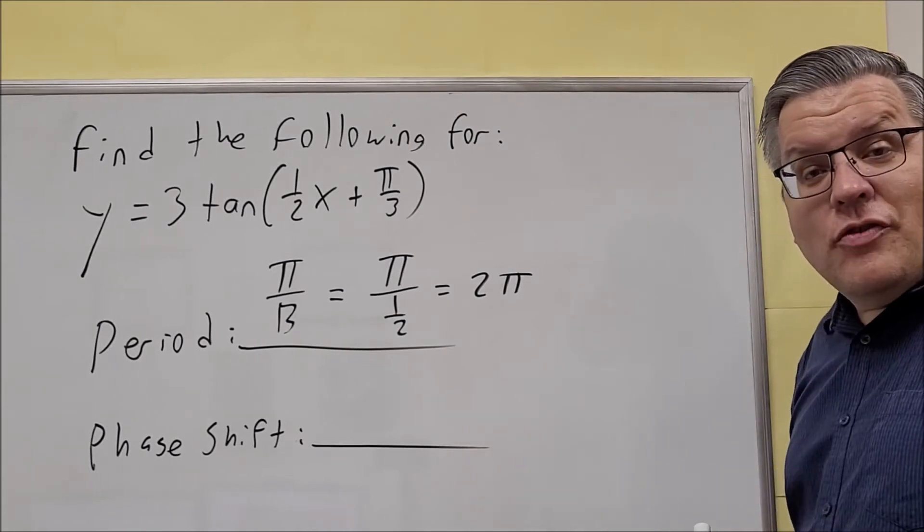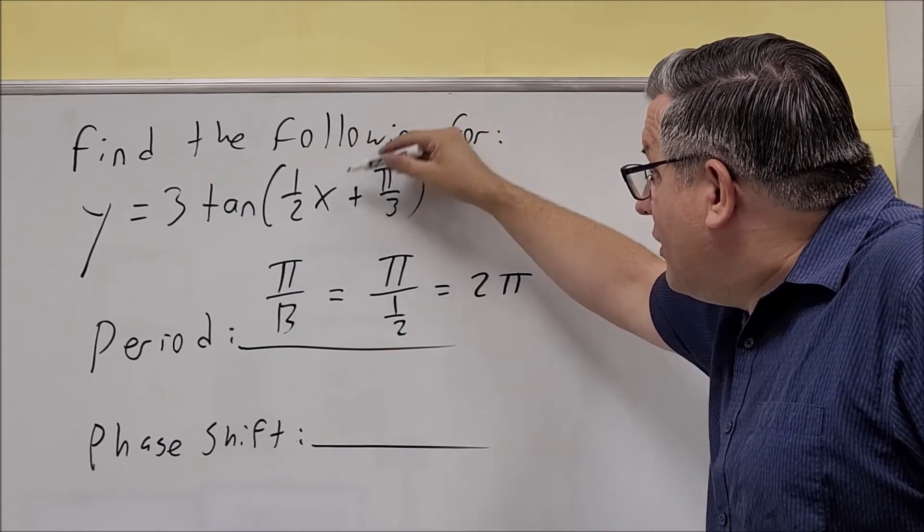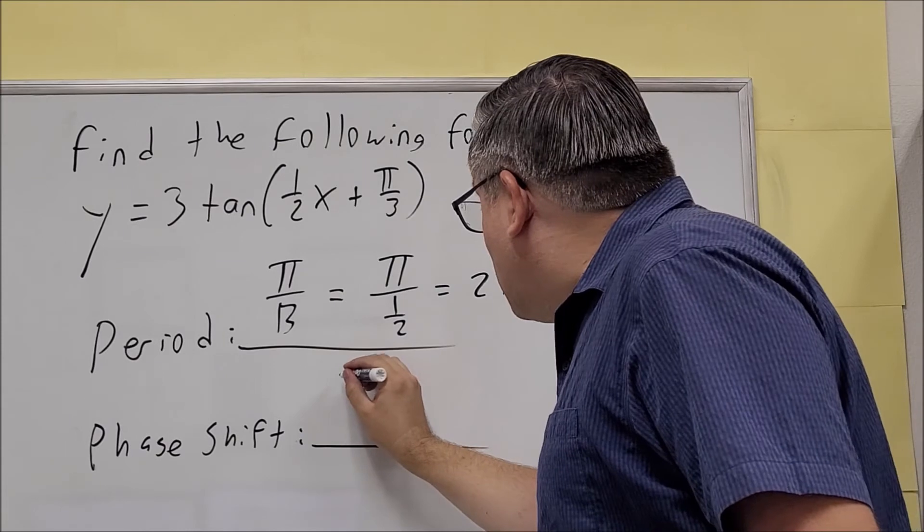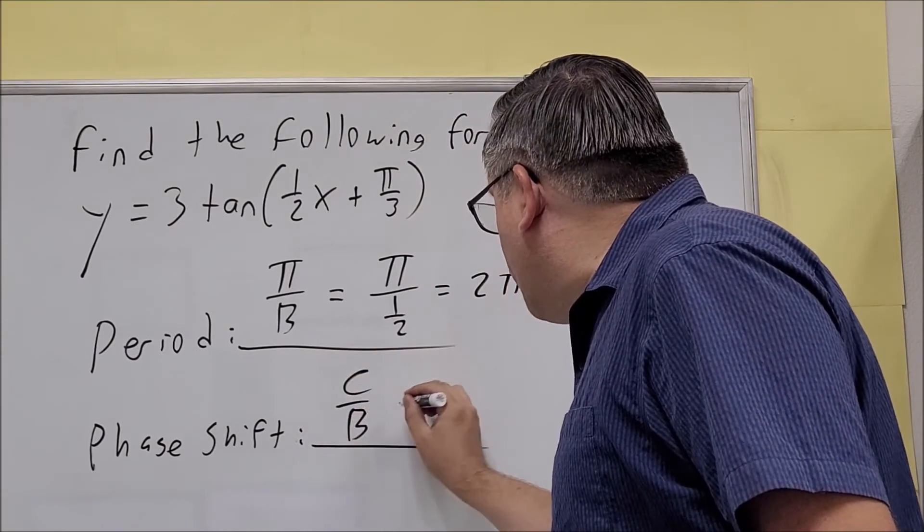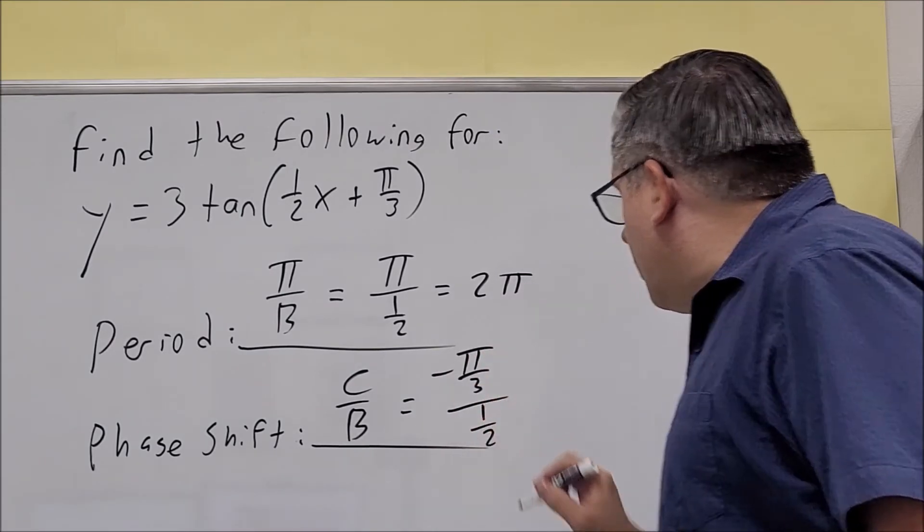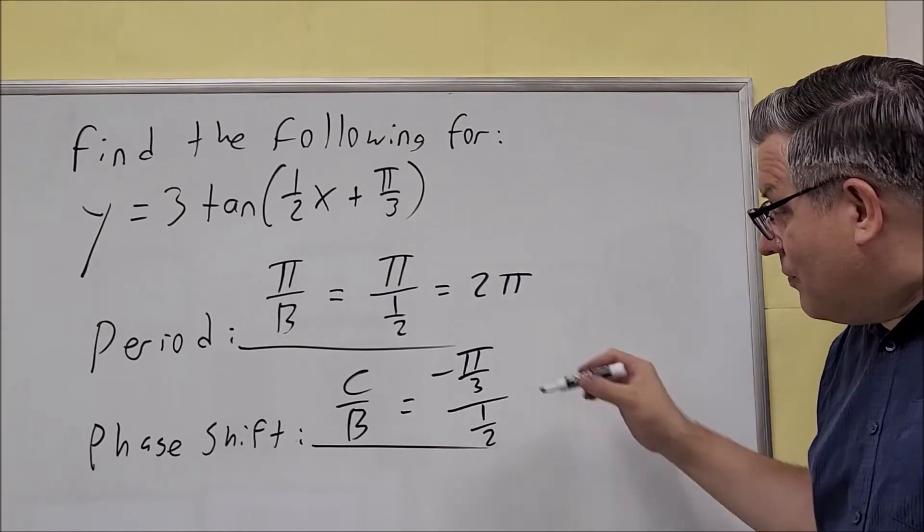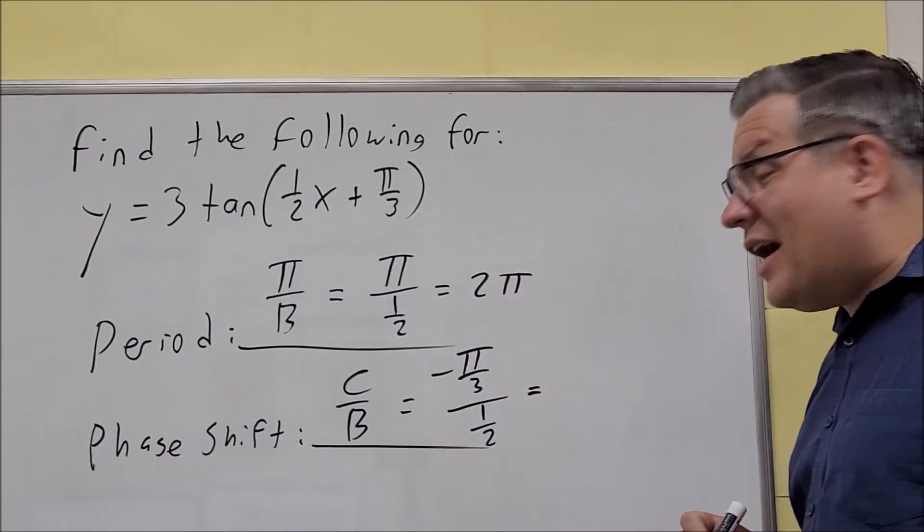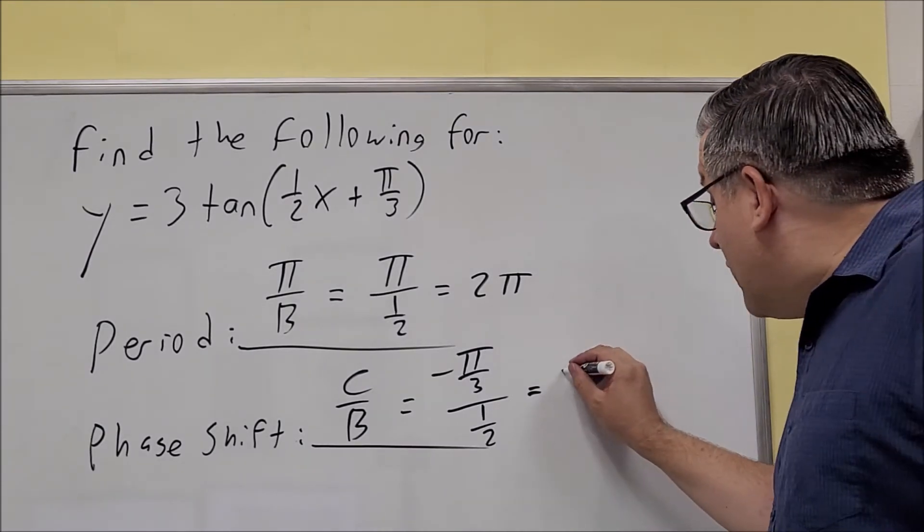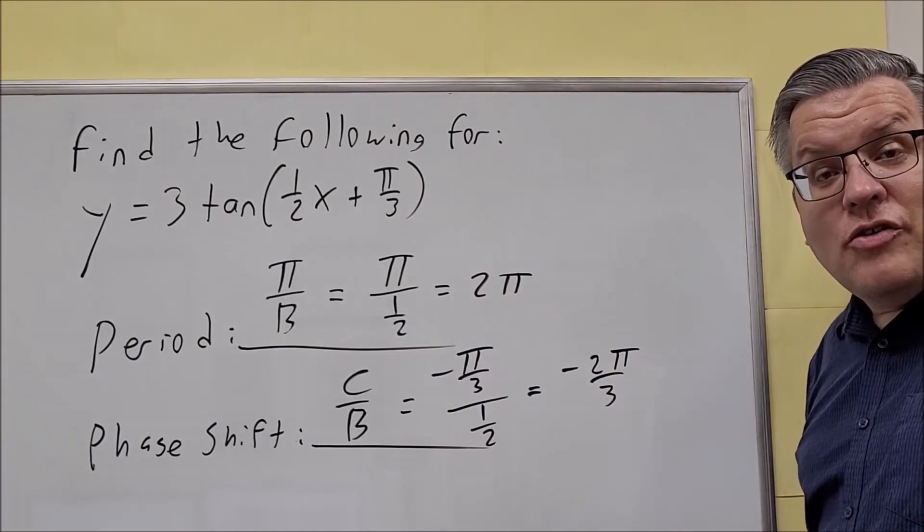Next, we want to do the phase shift. Now the formula for phase shift is c over b, remember it's always the opposite sign of c over b. So this is going to be, against the formula, I'll write that out, c over b. It's going to be negative π over 3 divided by the number in front of the x. So negative π over 3 divided by 1 half, if you flip and multiply, it's going to be negative π over 3 times 2 over 1. So you're going to get negative 2π over 3, and that is going to be your phase shift.